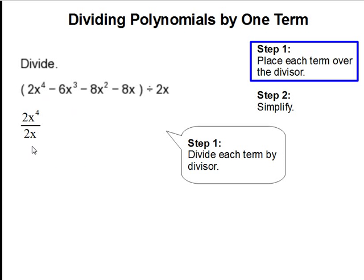So 2x to the fourth divided by 2x, and minus 6x to the third that's going to be also divided by 2x, and divide our next term by 2x, and then divide our last term by 2x.